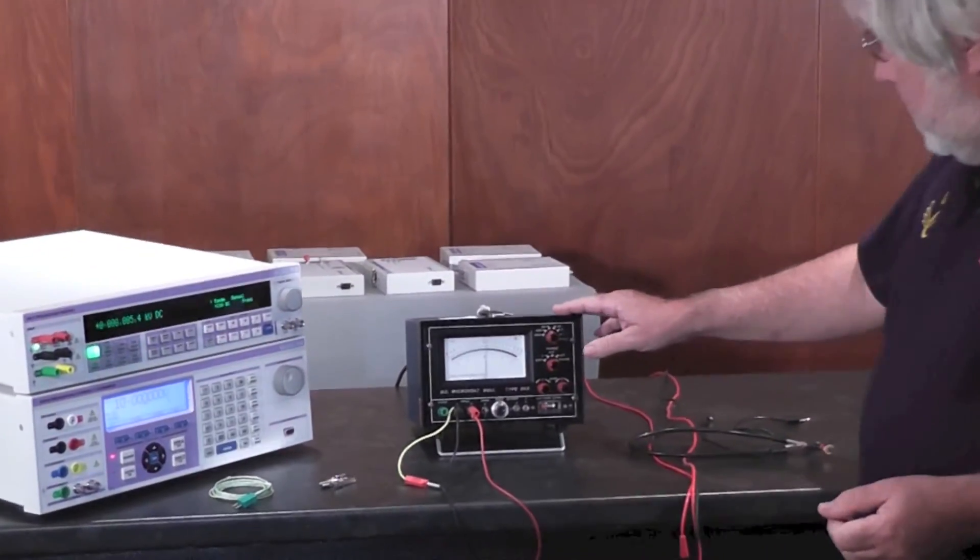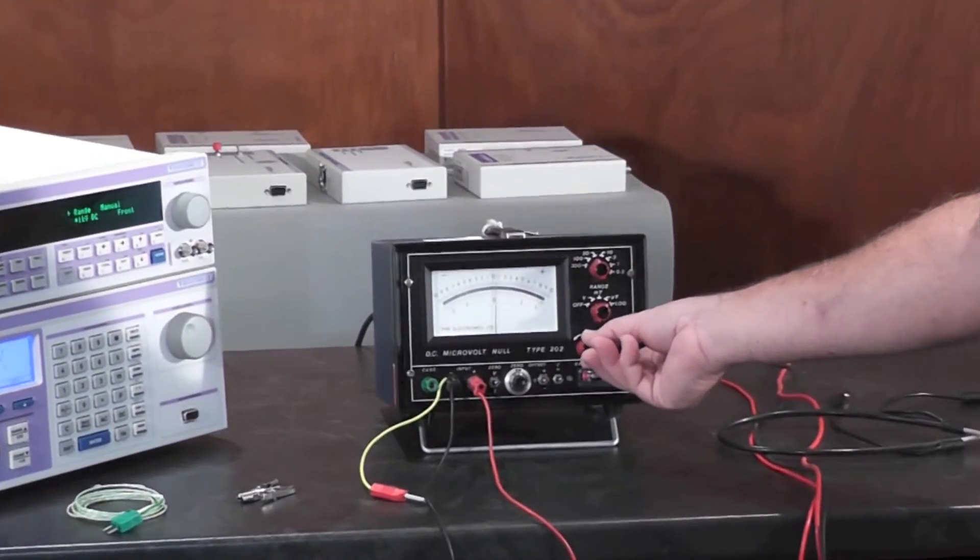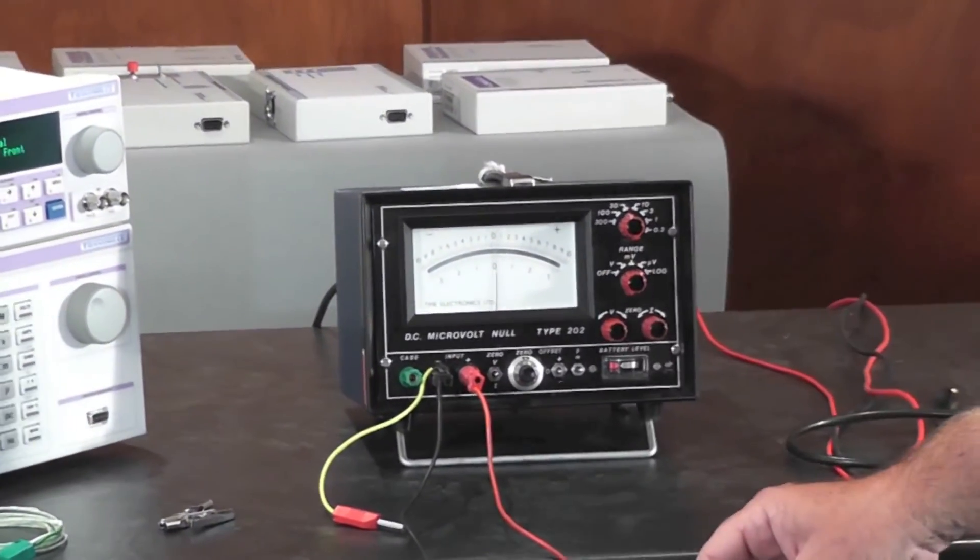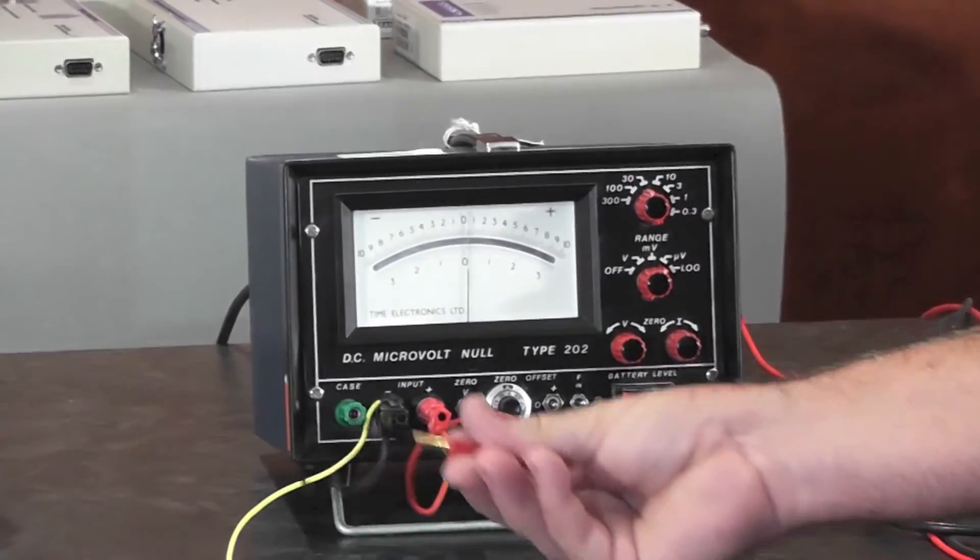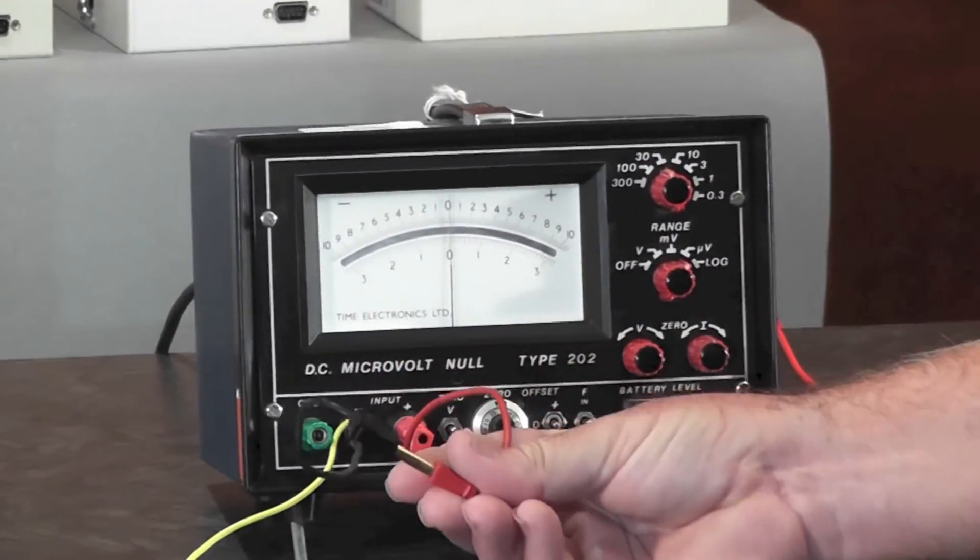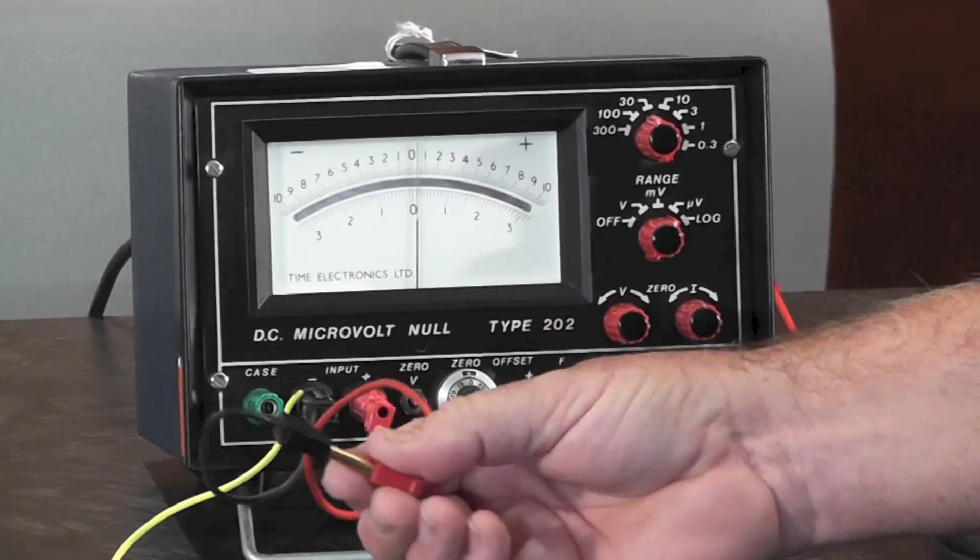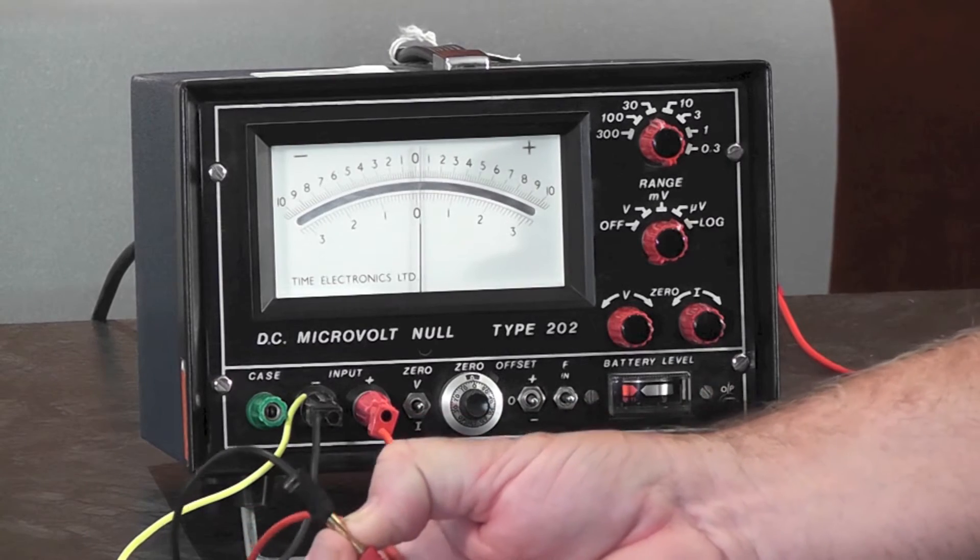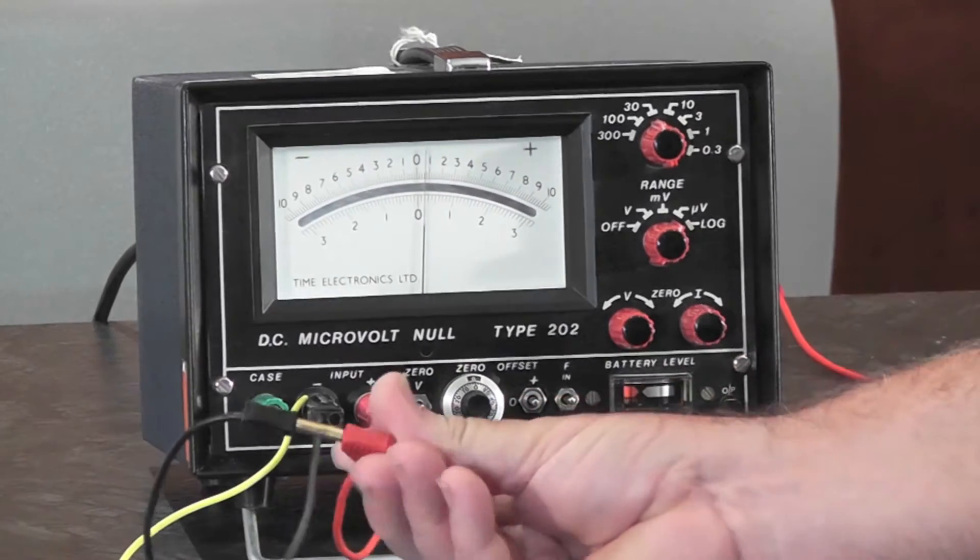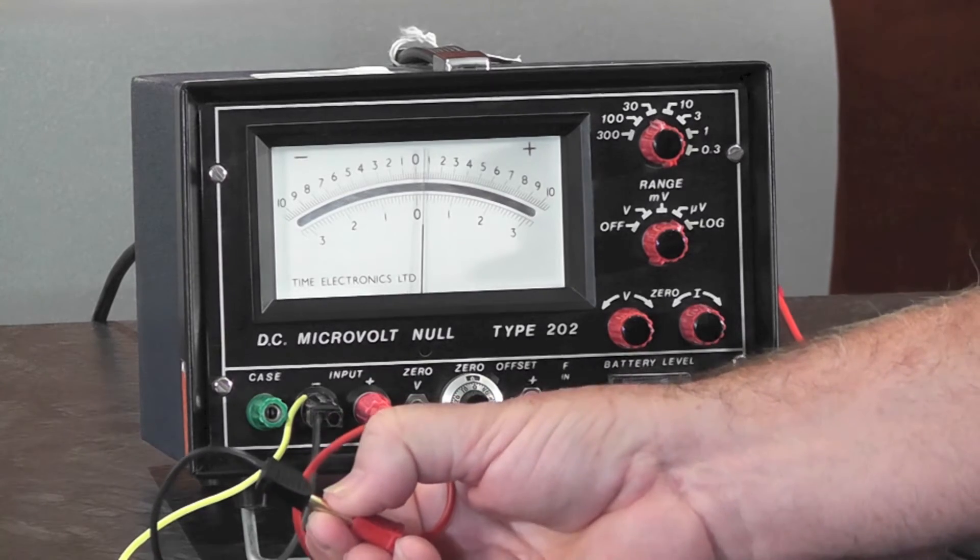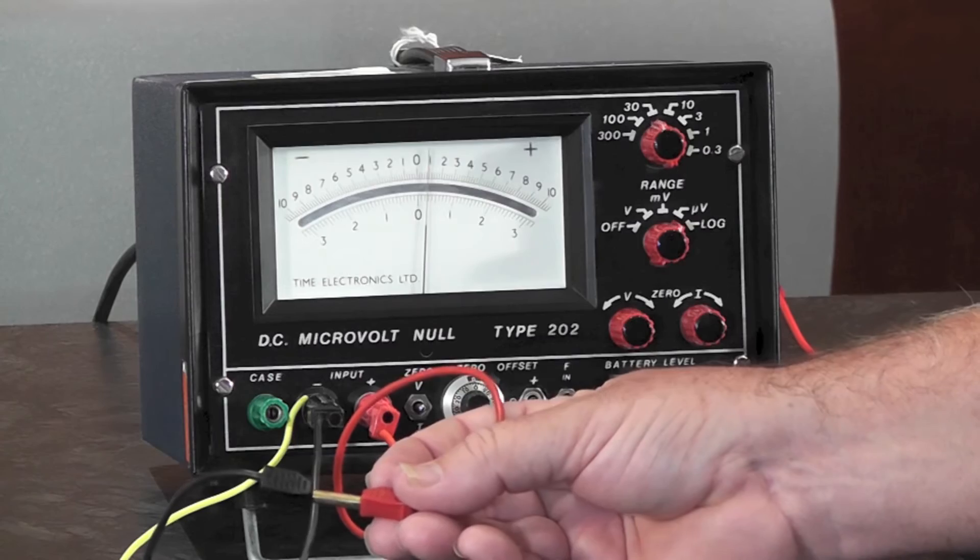I have here a null meter set on the 30 microvolt range, so it's quite an insensitive range. At the moment I've just got two short leads with a couple of copper connectors, gold plated copper connectors coming together. You can probably see if I deliberately introduce a bit of temperature into the junction between the two, you really get very little difference on the null meter.